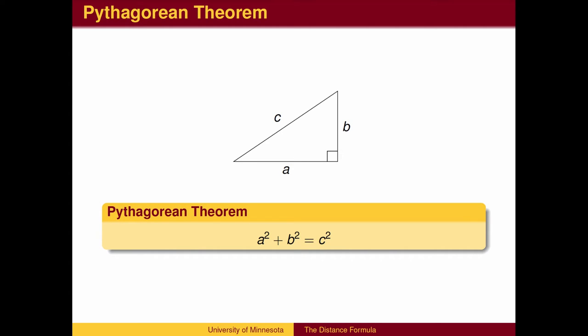Recall the Pythagorean Theorem for a right triangle, which finds the length of the hypotenuse, c, given the length of the legs, a and b.